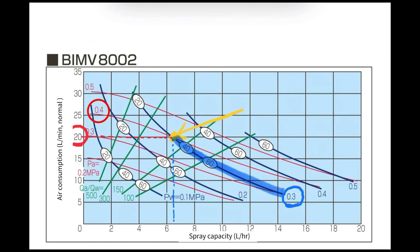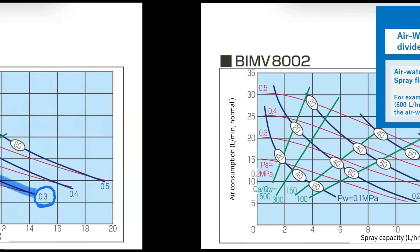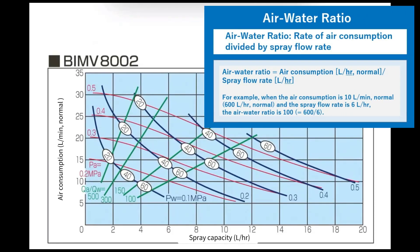Lastly, look at the green lines. The green lines represent what we call the air-water ratio. The air-water ratio is the ratio of water and air consumption per the same hour. For example, at this point the water is 6 liters per hour and the air is 10 normal liters per minute — when converted to hours, 600 normal liters per hour of compressed air is consumed.